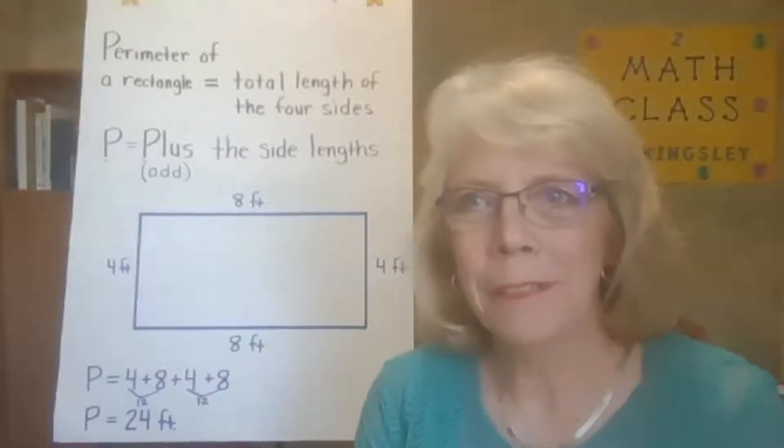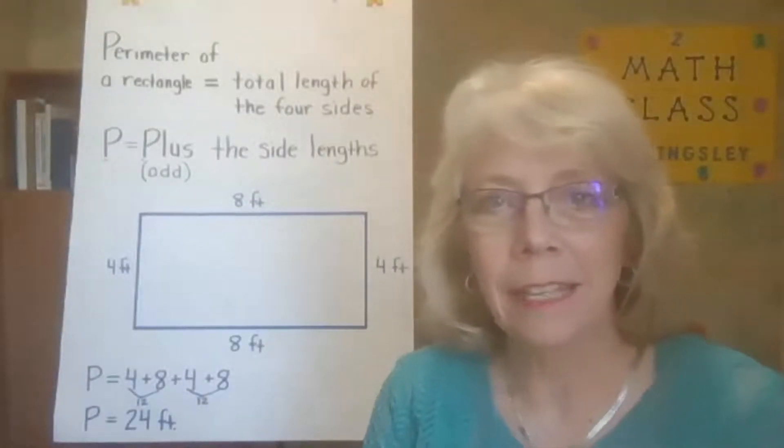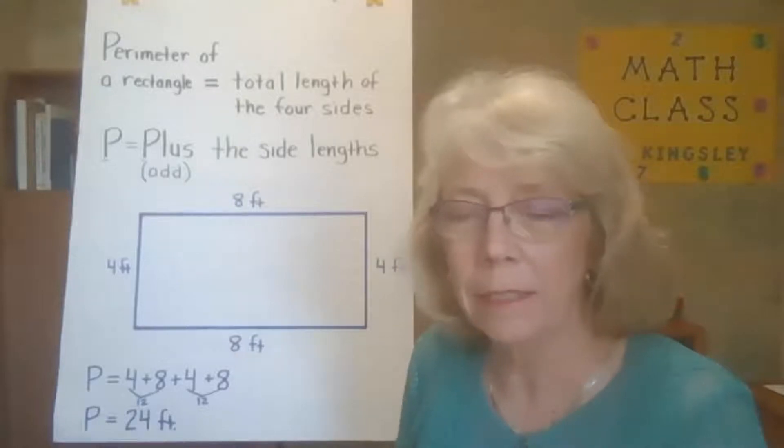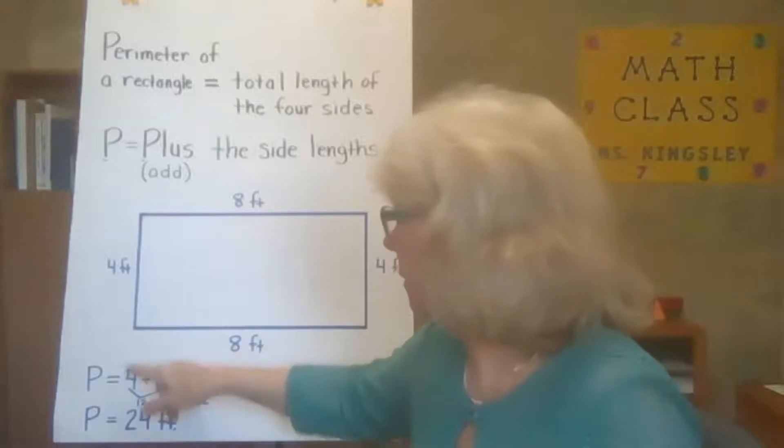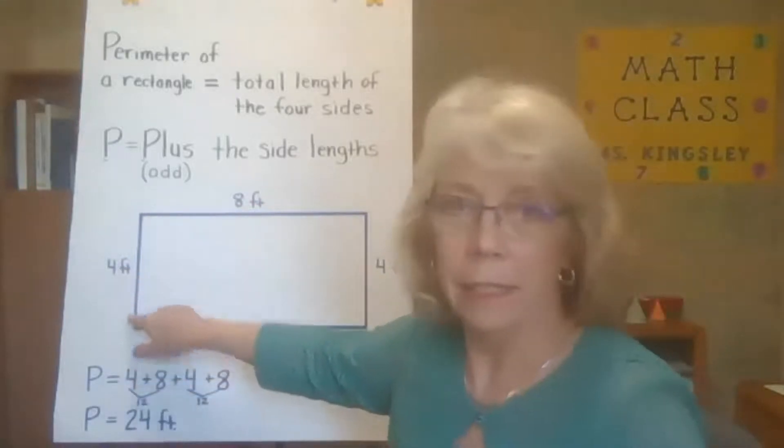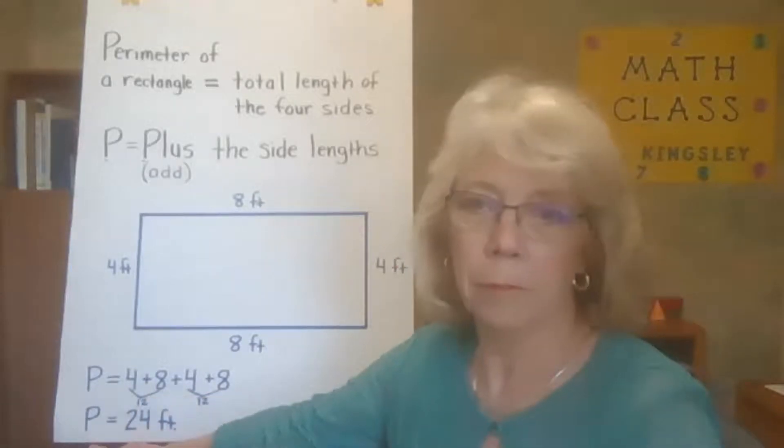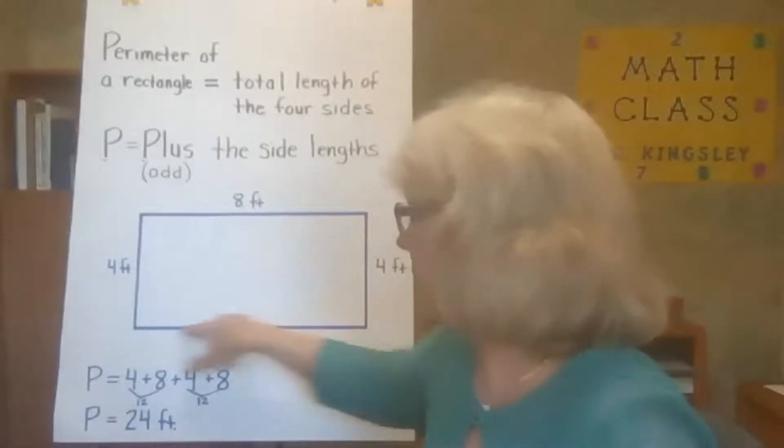So perimeter of a rectangle is the length around the outside of this shape. Rectangle is a special kind of polygon, and so we plus the sides. So in this rectangle, if we were to start here and go around, we would plus 4 plus 8 plus 4 plus 8, which gives us our perimeter. Add those together and we get a perimeter of 24 feet for this rectangle.